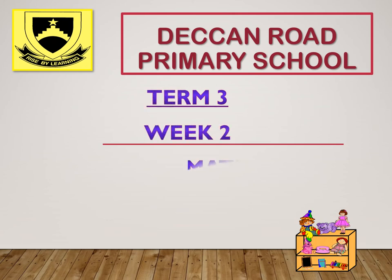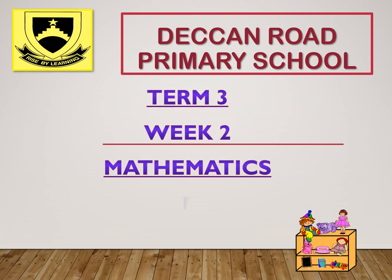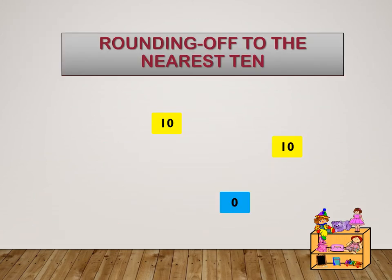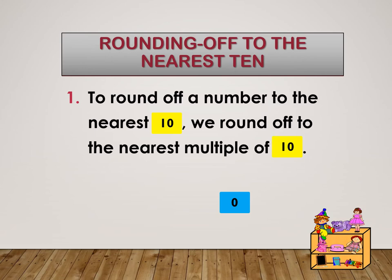Rounding off to the nearest 10. To round off a number to the nearest 10, we round off to the nearest multiple of 10. In other words, the answer will always end in a 0.